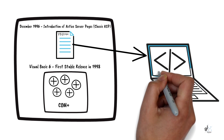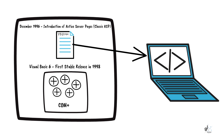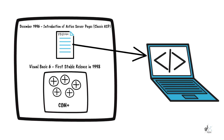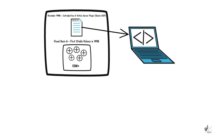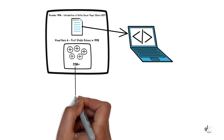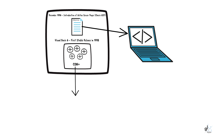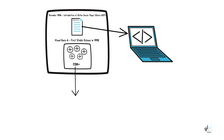Back then we typically created our applications using a three-tier architecture. Classic ASP contained code and logic to output HTML, JavaScript, and CSS to the client's browser. COM components that contained business rules ran in MTS, later known as COM+.